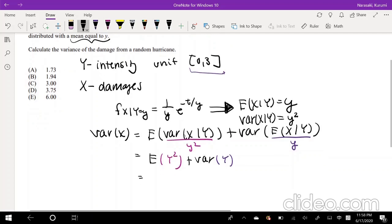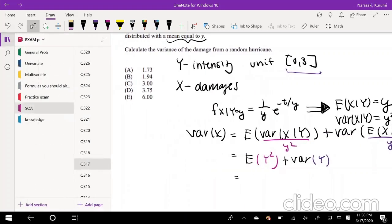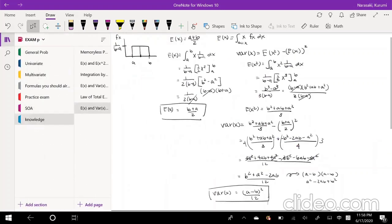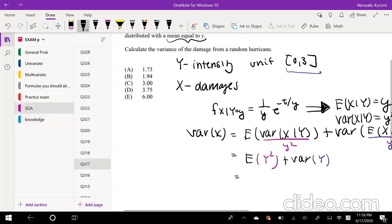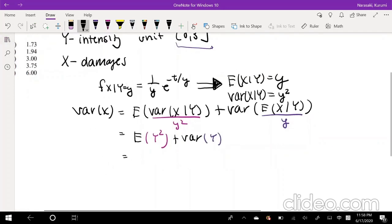Well, define the expected value of y squared. So we actually proved this in my last video. Expectation of y squared is b squared plus ab plus a squared over 3. So if you have time, definitely go check out that other video. But if you don't, you can definitely derive it on the exam. So, a squared plus ab plus b squared over 3.